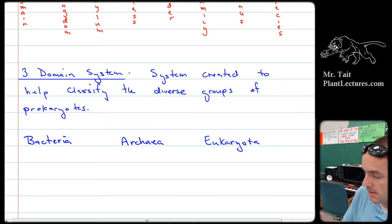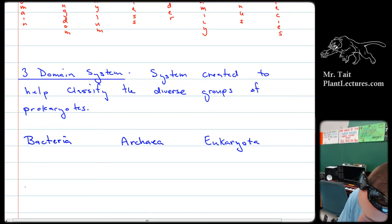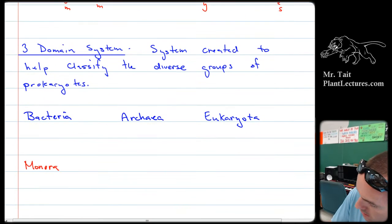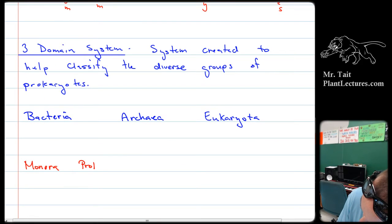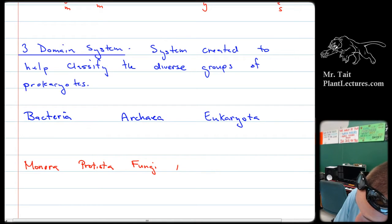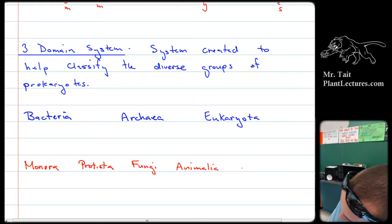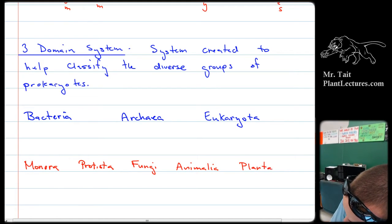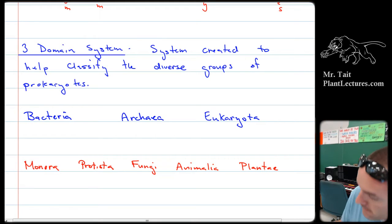The five kingdoms are monera, protista, fungi, animalia, and plantae.